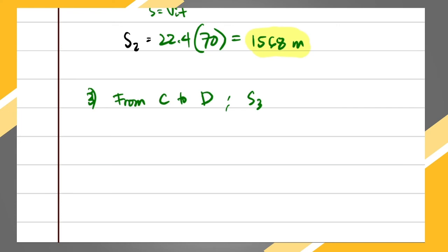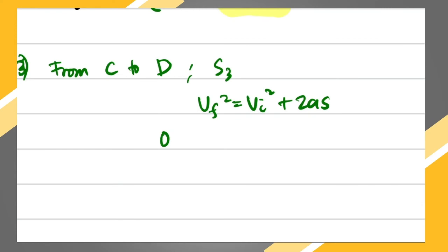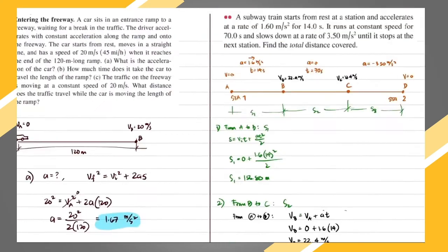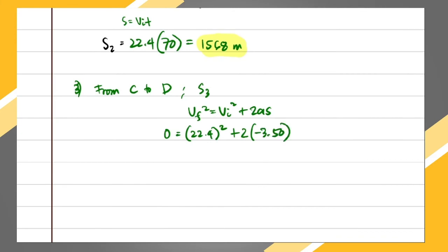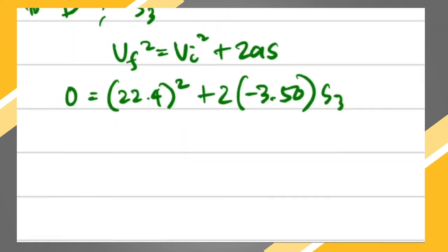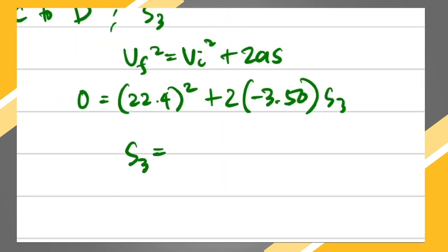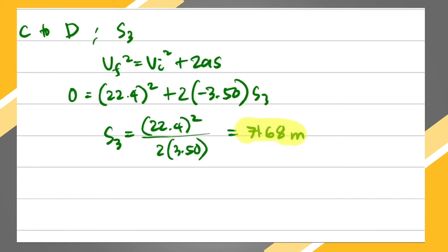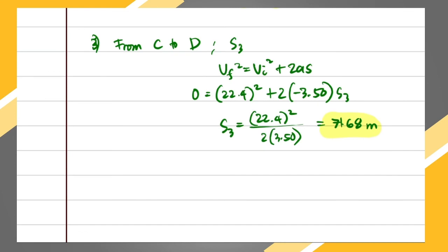Using vf² = vi² + 2·a·s for the C-to-D segment: 0² = 22.4² + 2(−3.50)(s3). Solving: s3 = 22.4² / (2 × 3.50) = 501.76 / 7 = 71.68 meters. That is the distance s3.